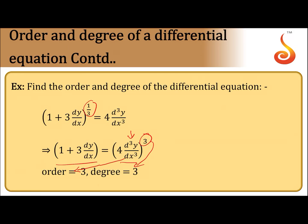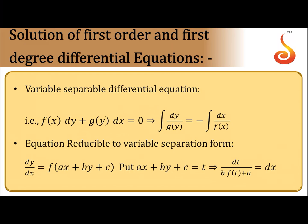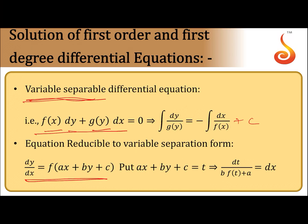Solution of first-order, first-degree differential equations: one method is variables separable. When given f(x)·dy = g(y)·dx, we separate y-variables on one side and x-variables on the other, integrate both sides, and add a constant to find the solution. Sometimes a differential equation may be converted to variable-separable form by substituting ax + by + c = t to reduce it appropriately.